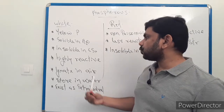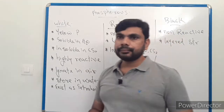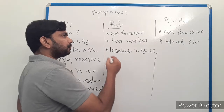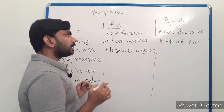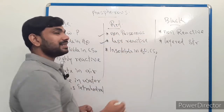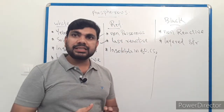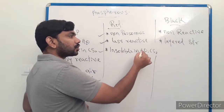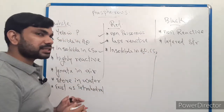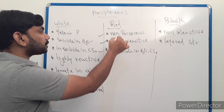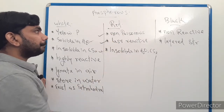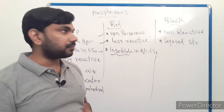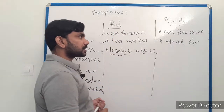Red phosphorus is less reactive. It is the non-poisonous form of phosphorus. Unlike white phosphorus which is soluble in water, red phosphorus is insoluble in both water and carbon disulfide.